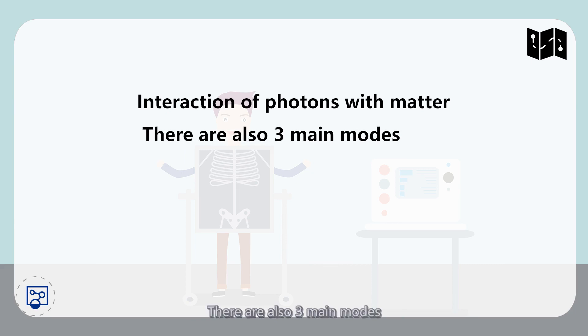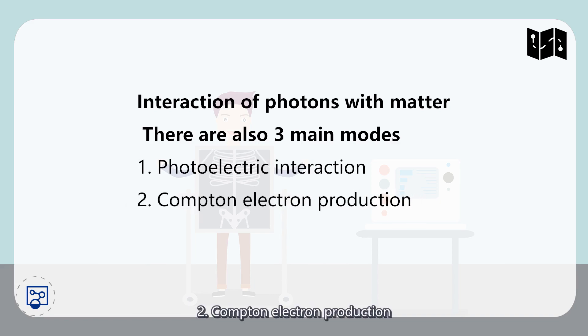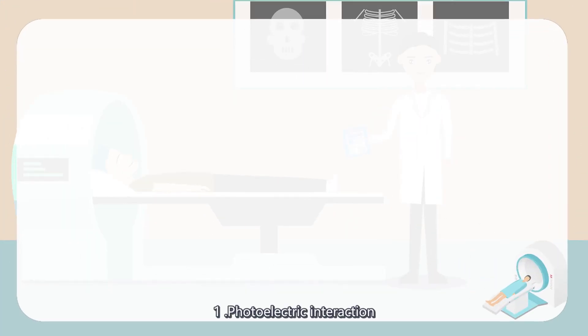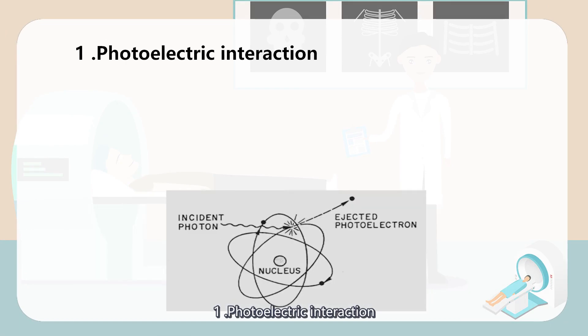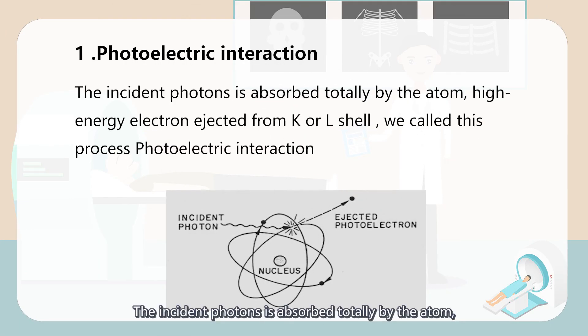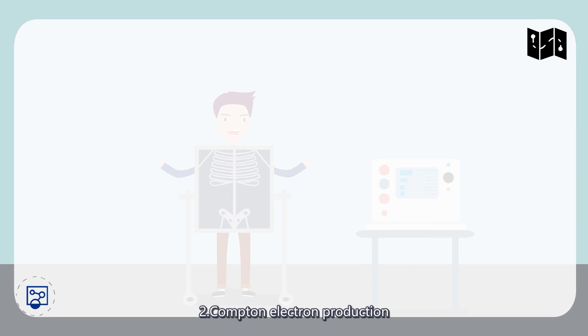There are also three main modes. The first one is photoelectric interaction. The incident photon is absorbed totally by the atom. High energy electrons are ejected from the K or L shell. We call this process photoelectric interaction.